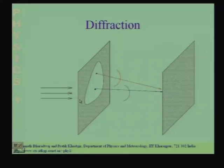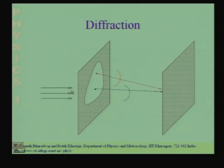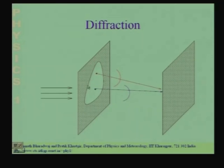Diffraction occurs in a situation where I have a wave incident on an aperture like the one shown over here. In this situation, we have a plane wave incident on an opaque screen. In that opaque screen, we have an aperture, so the wave can pass through only through the aperture. We are interested in the intensity pattern that this aperture would produce on a screen placed far away from the aperture. The question is how do we handle such problems, and in the last class I had told you that we can apply the Huygens-Fresnel principle.